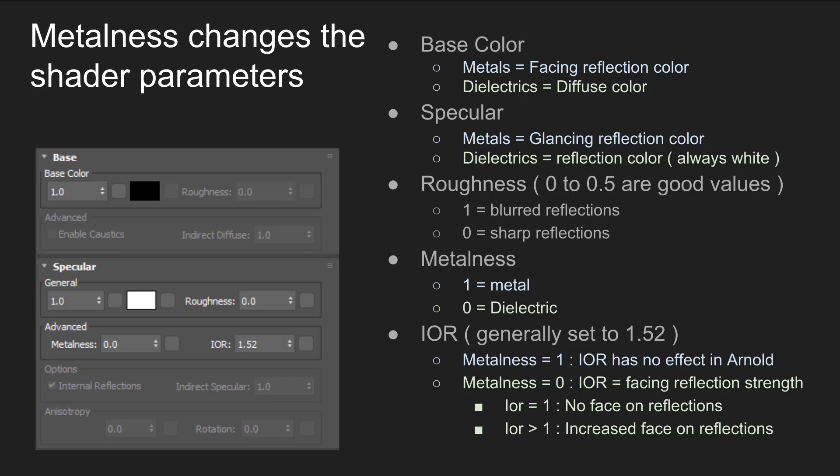With metals, the base colour controls the facing reflection colour. With dielectrics, it controls the overall diffuse scattered light of the surface. The specular colour in metals controls the glancing reflection colour, and it also controls the glancing reflection colour in dielectrics — but in this case, reflection colours should always be set to white. Arnold doesn't control this for you, so you have perfect liberty to make a coloured specular reflection for dielectrics, but they don't exist in reality. In reality, dielectrics' reflection colour is always white due to the nature of the physics.